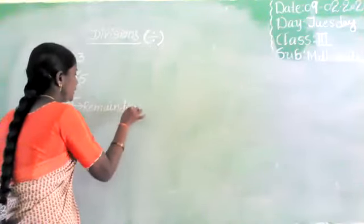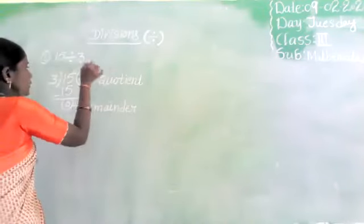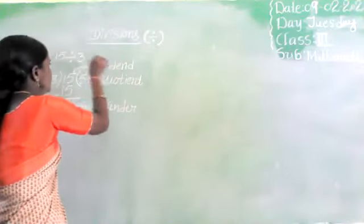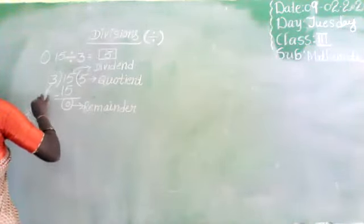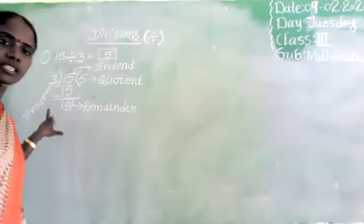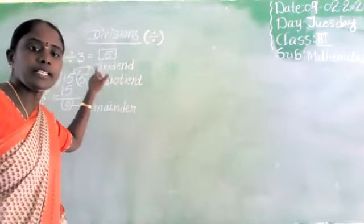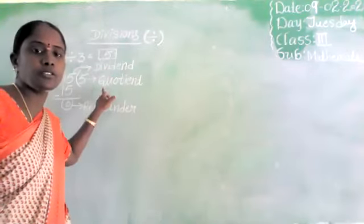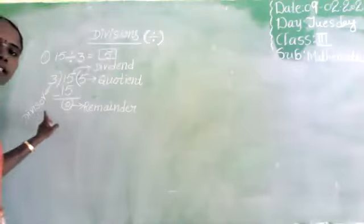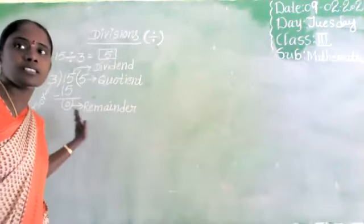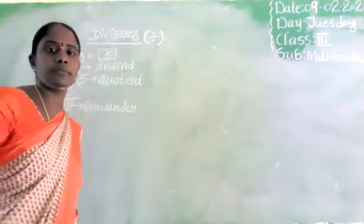Here 0 is the remainder and 5 is the quotient. 15 is the dividend — D-I-V-I-D-E-N-D. The quotient — Q-U-O-T-I-E-N-T — is the answer. 3 is the divisor. After division: dividend divided by divisor gives us the quotient as the answer.